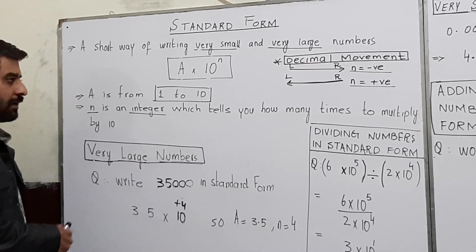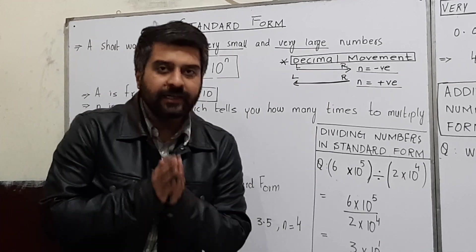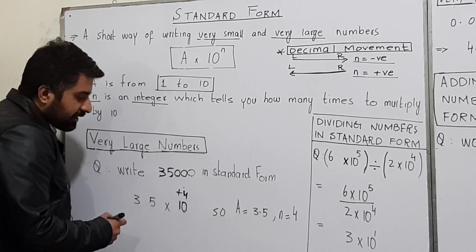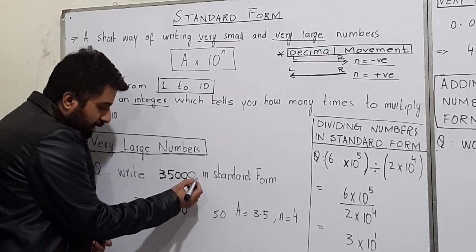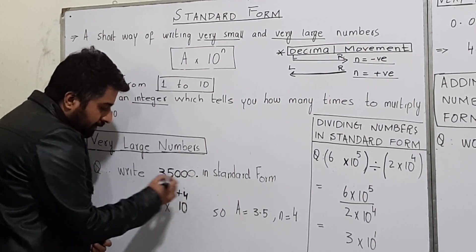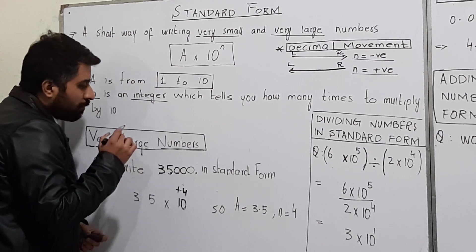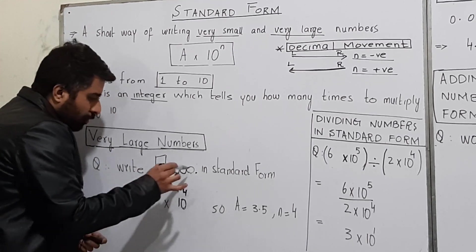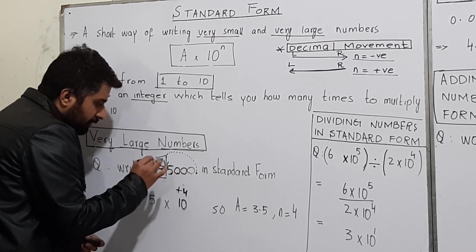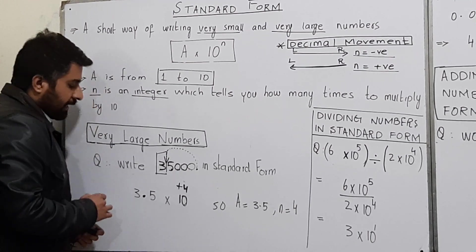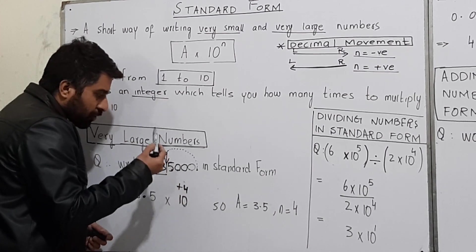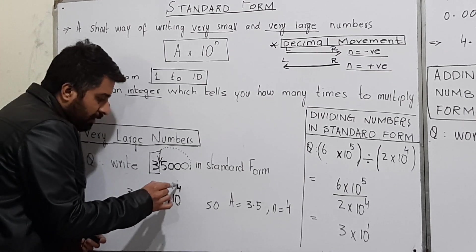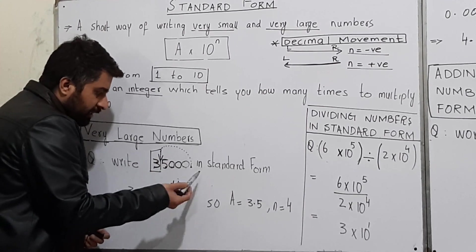Case 1 is for very large numbers. If you have to express 35,000 in standard form, first identify where the decimal is — it is present at the last. In standard form, you have to move your decimal after your first digit, which is 3 in this case. You move the decimal from the end immediately after 3, and you count the number of digits that you have moved: 1, 2, 3, and 4 digits. So 10 raised to the power will be 4.